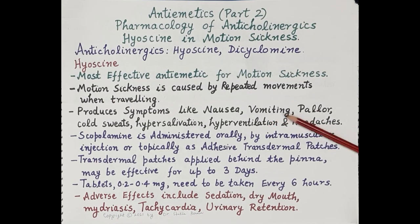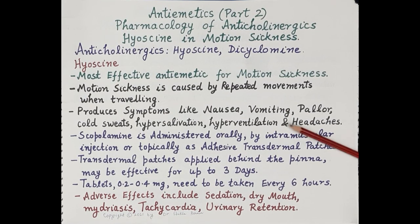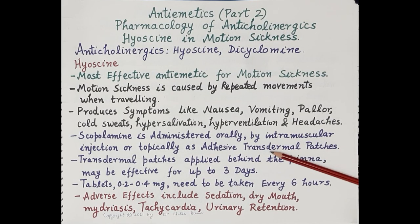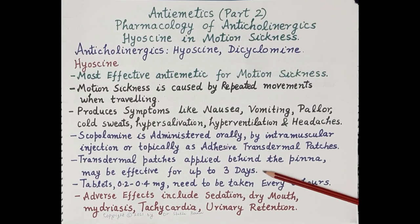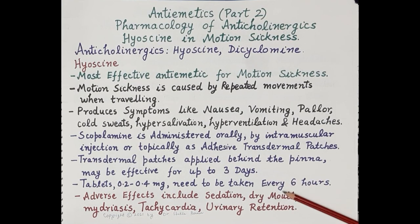Motion sickness produces symptoms such as nausea, vomiting, pallor, cold sweats, hypersalivation, hyperventilation, and headaches. Scopolamine or hyoscine is administered orally, by intramuscular injection, or topically as adhesive transdermal patches. Transdermal patches of hyoscine used for prevention of nausea and vomiting due to motion sickness are applied behind the pinna of the ear, and may be effective for up to three days.